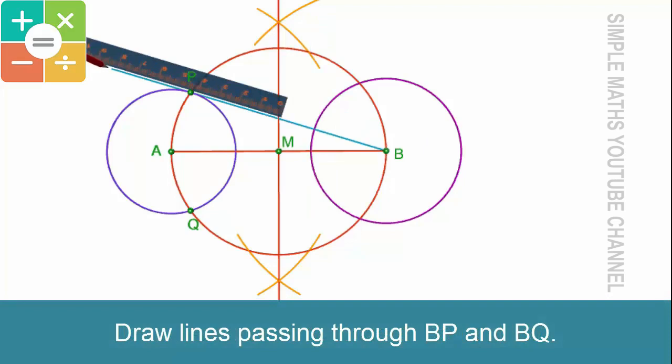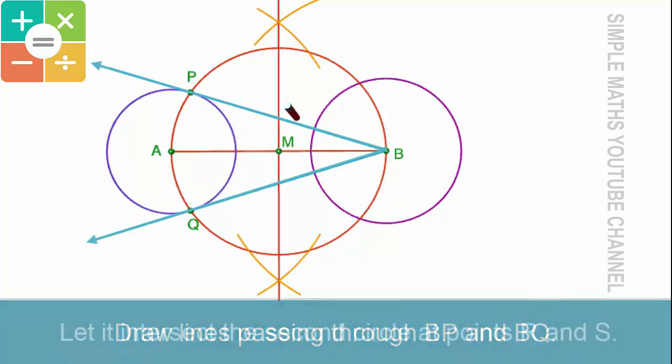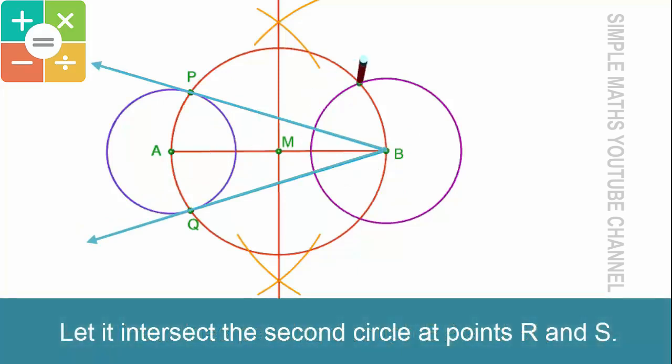Draw a line passing through BP and BQ. Let it intersect the second circle at points R and S.